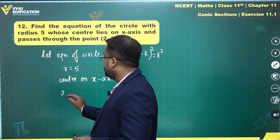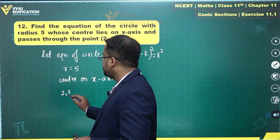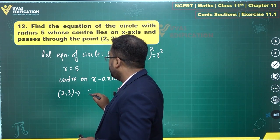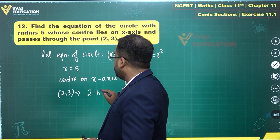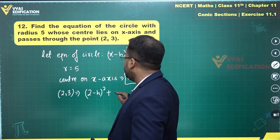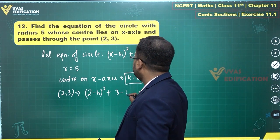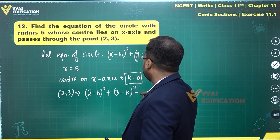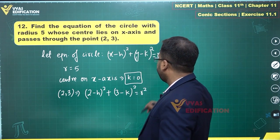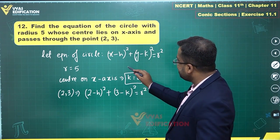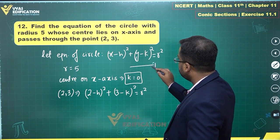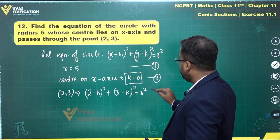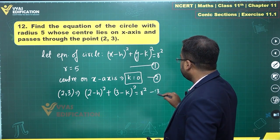The circle passes through the point (2, 3). Since the circle passes through (2, 3), this tells me that 2 minus h squared plus 3 minus k squared will be equal to r squared. So we have three conditions, and we already have the values of r and k.